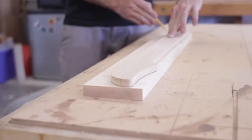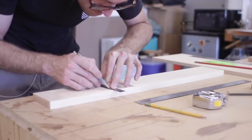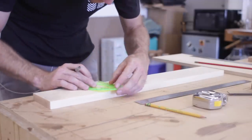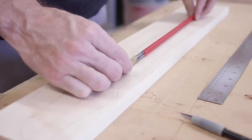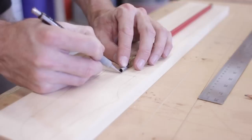With everything traced out, I could figure out where my nut was going to be, and from there I could figure out where my truss rod would be installed, as you want the end of the truss rod to be pretty much in line with the nut.